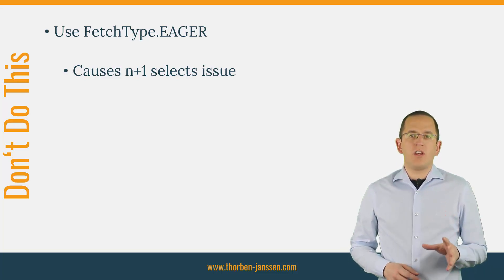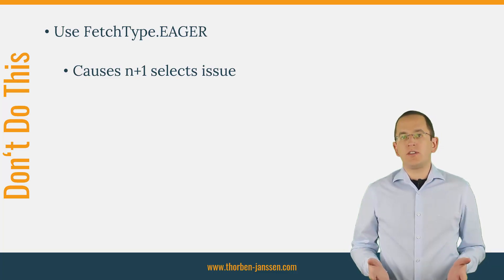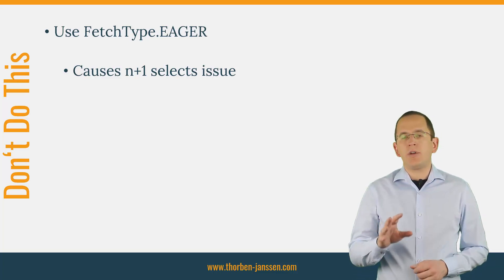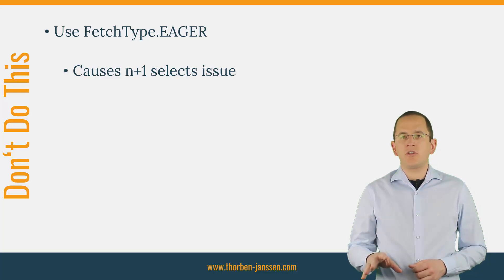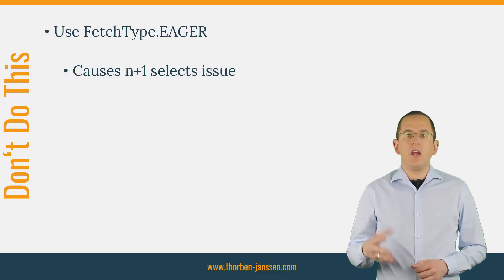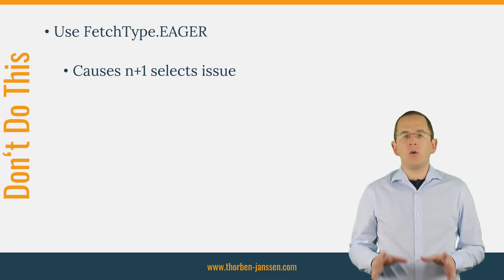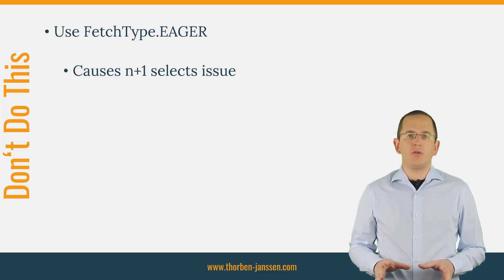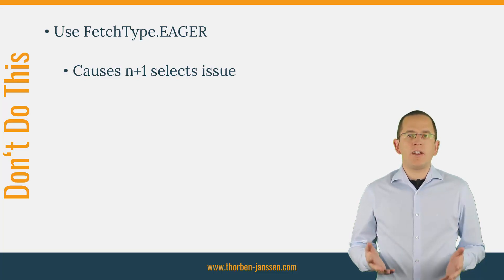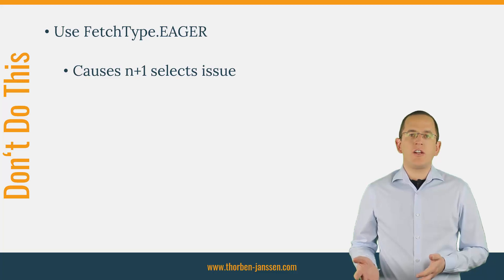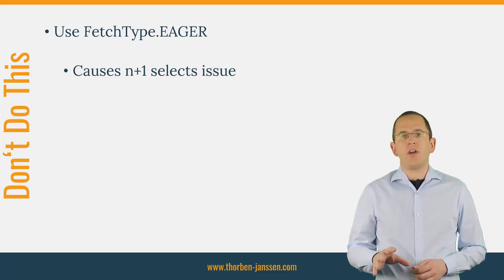It gets even worse if you don't use the EntityManager find method and don't reference the association in a join fetch clause. Hibernate then executes an additional query to fetch the association. This often results in the n+1 select issue, which is the most common cause of performance issues. So please don't use fetch type eager. As explained in various articles on my blog and in videos on this channel, you should always prefer fetch type lazy.